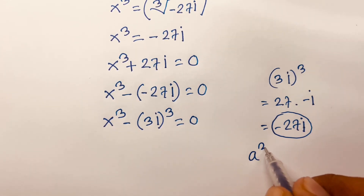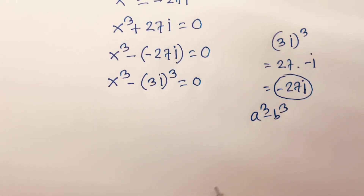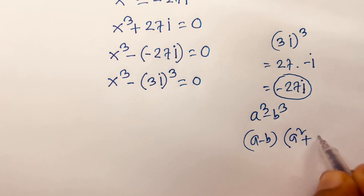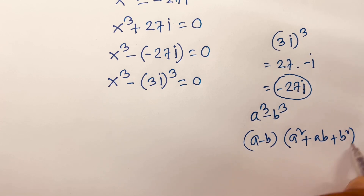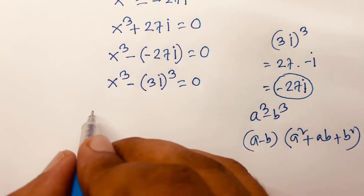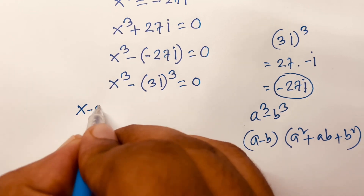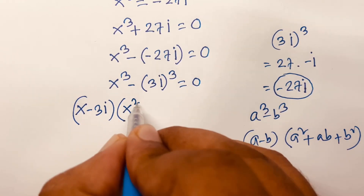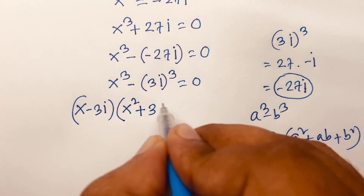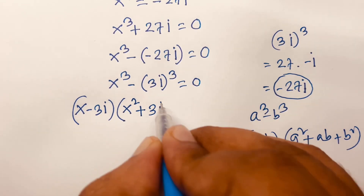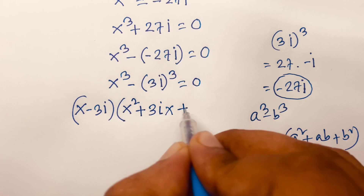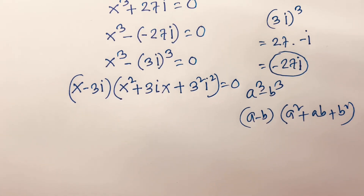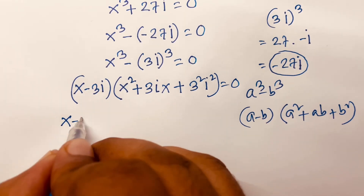Using the factoring rule a³ minus b³ equals (a minus b)(a² + ab + b²), we factor x³ minus (3i)³ as (x minus 3i)(x² + 3ix + (3i)²) equals 0.